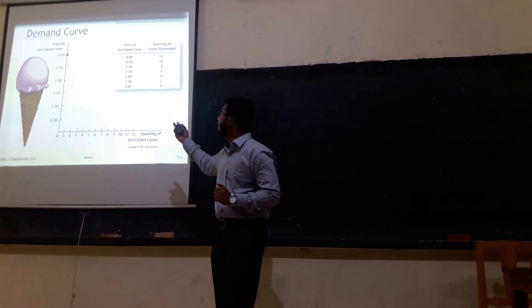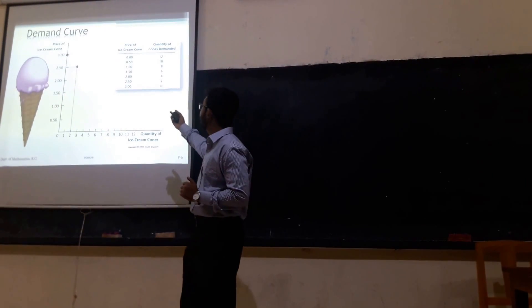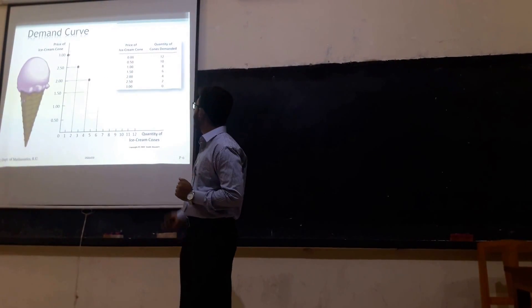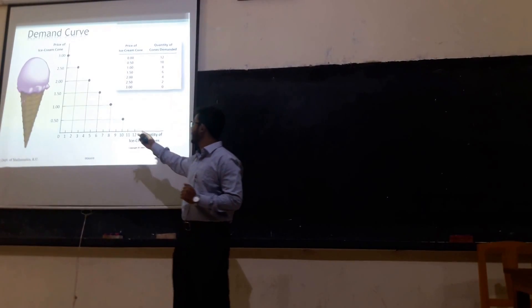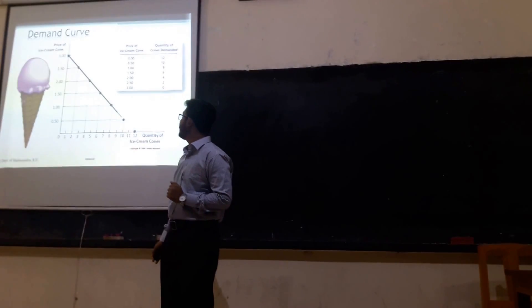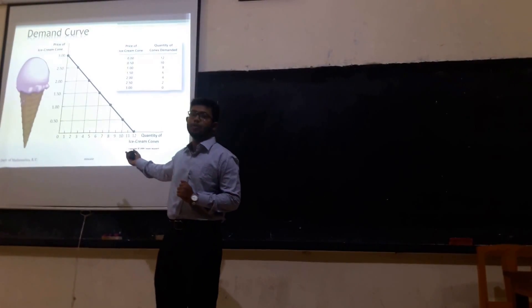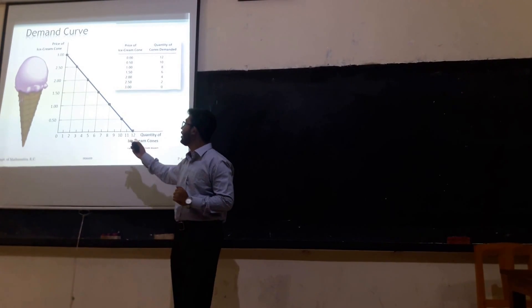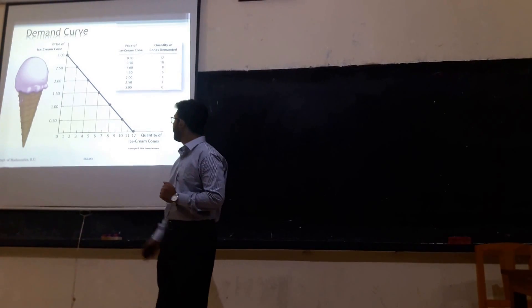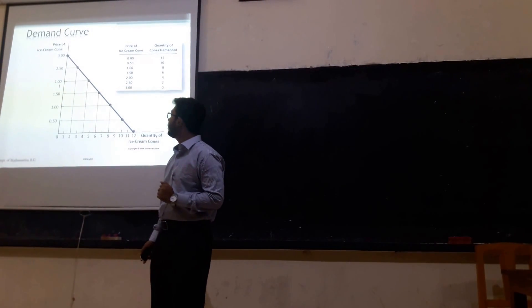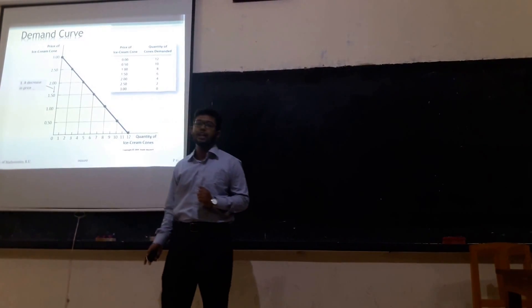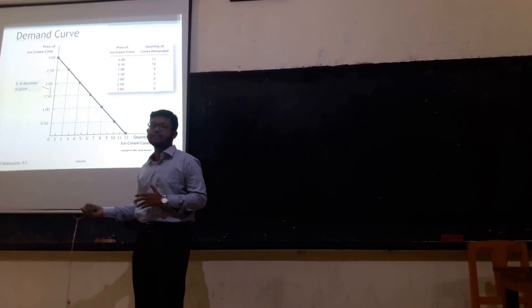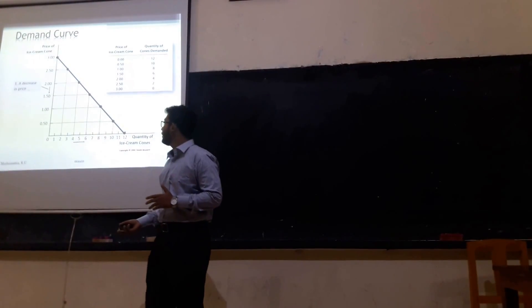Here I have a table of the price of a high-speed phone and the quantity demanded. When you plot each point, you get a downward-sloping line — this is the demand curve. Observe that if the price decreases, the quantity demanded increases.